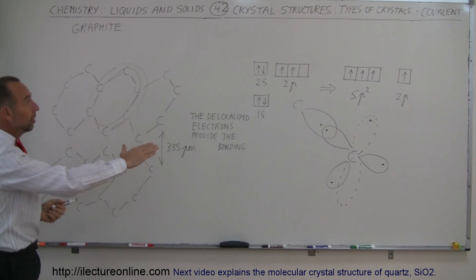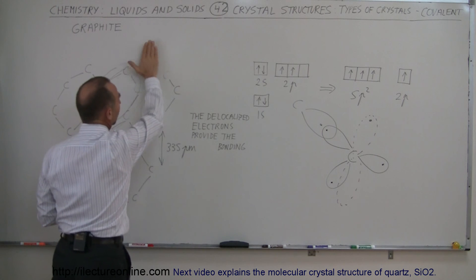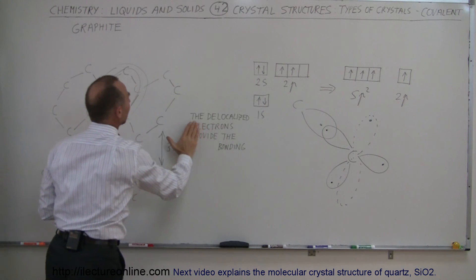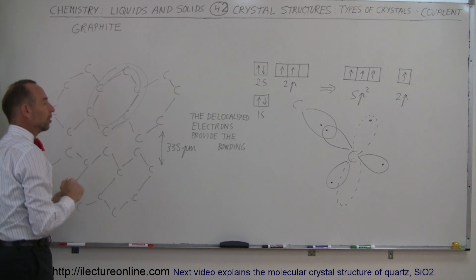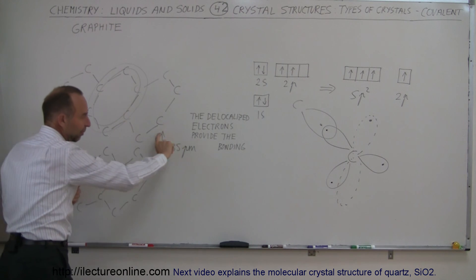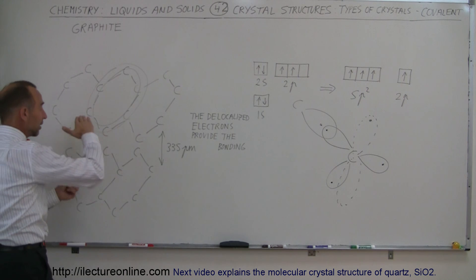But again here's an example of a crystalline structure, this is a covalent structure and you see you make these sheets where you just get more and more of these tied together in covalent bonds and then one sheet is then connected to the other sheet. You see the separation distance is quite large, 335 picometers.